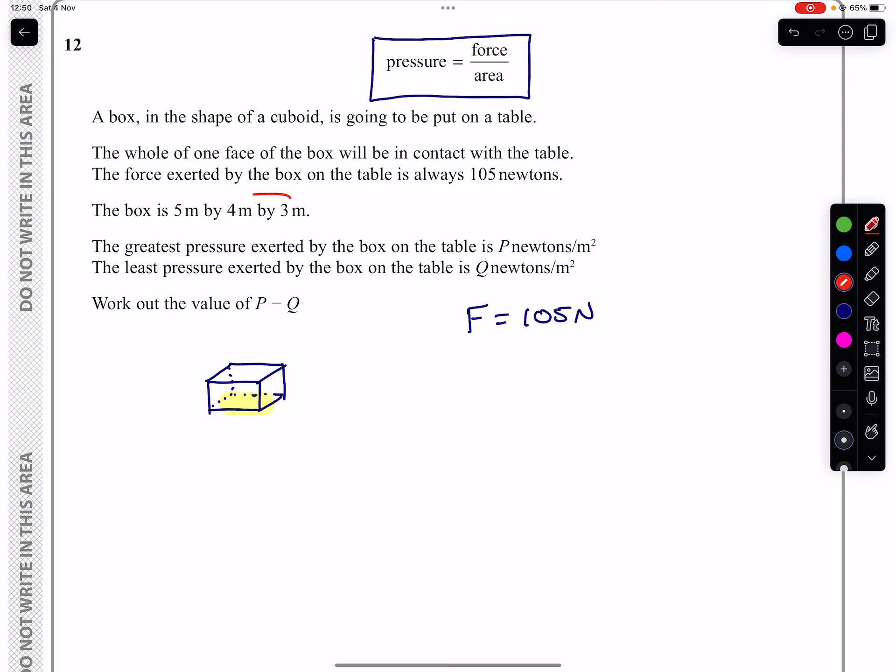We are given the dimensions of our box as being 5 by 4 by 3. So I could just write down here length is 5, width is 4, and height is 3.